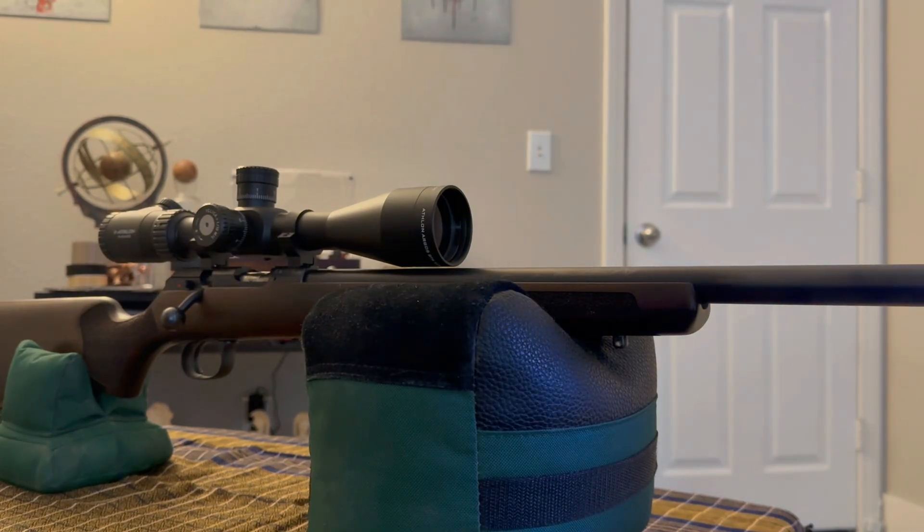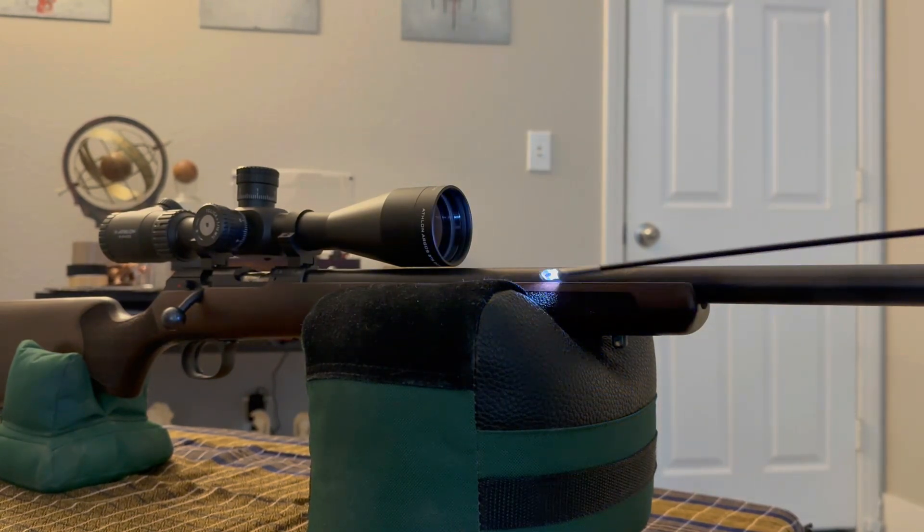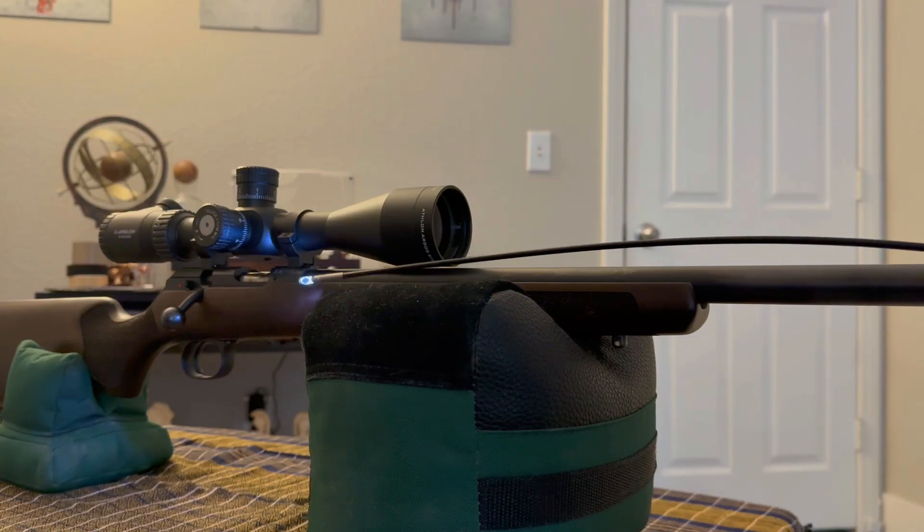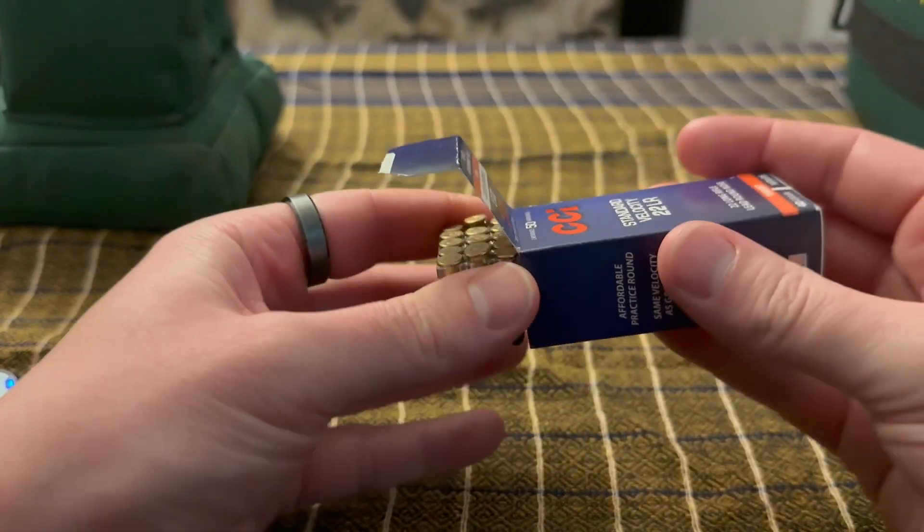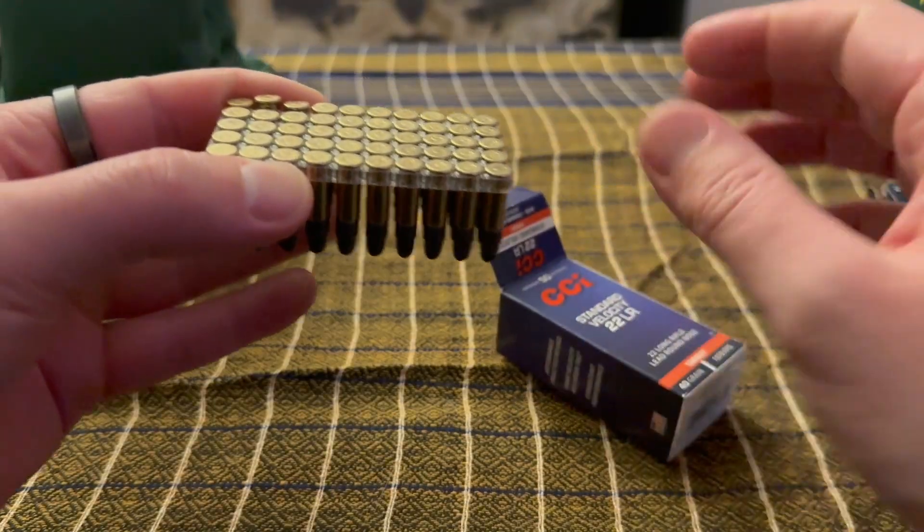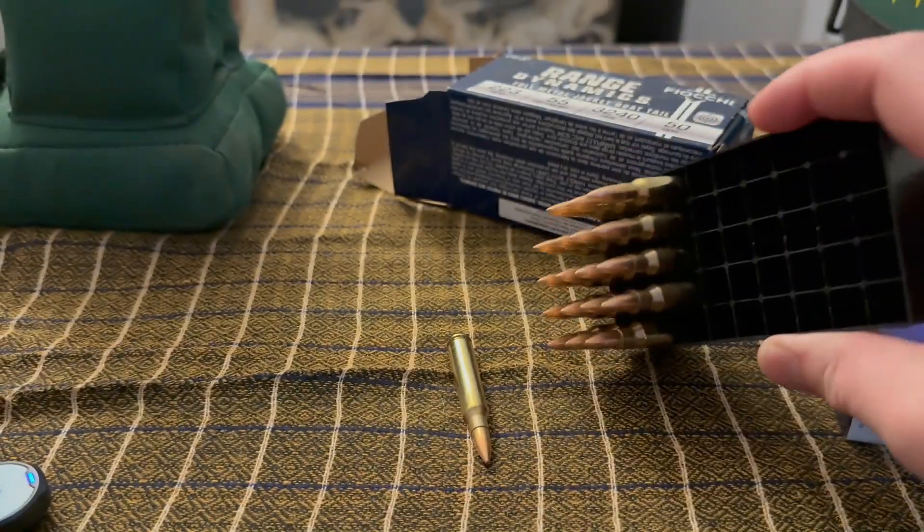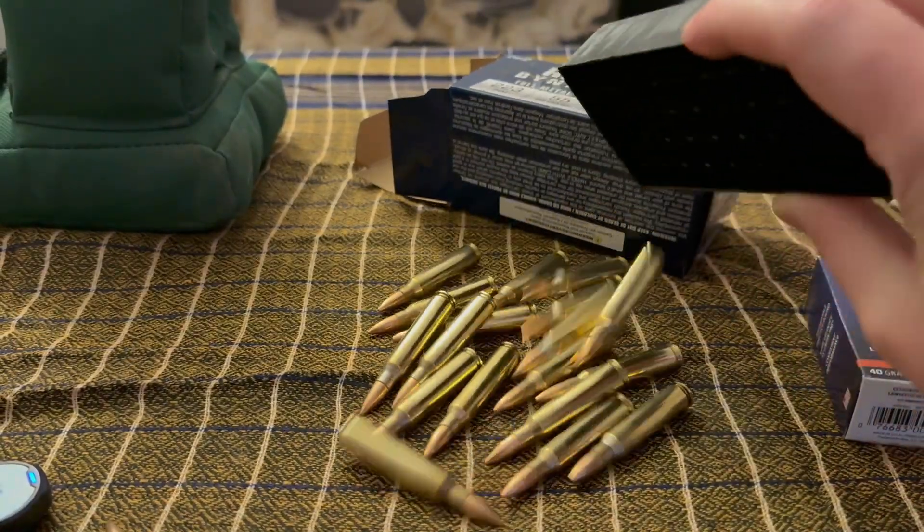Moving on to the .22LR, I have my CZ-457 Varmint. This is my bench rest precision rifle that has gone through about three cases of these lead-tipped CCI standard velocity rounds. Just about every round through this barrel has been a soft lead-tipped projectile as opposed to the copper jacketed .223s that we observed previously.